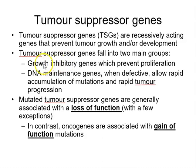Tumour suppressors fall into two main groups: growth inhibitory genes such as retinoblastoma protein coded by RB1, and P53 coded by TP53; and pro-apoptotic genes plus DNA maintenance genes — P53 also falls into the latter category. The vast majority of tumour suppressor genes are associated with loss of function, requiring loss of both copies. In contrast, oncogenes are associated with gain of function mutations — making the protein either super-active or overexpressed.